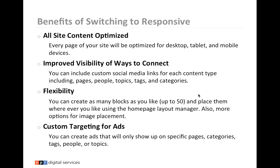Benefits of switching to responsive: all site content is optimized — every page of your site will be optimized for desktop, tablet, and mobile devices. A good way to see that is to look at your backstage site and resize it to see how it optimizes between the different breakpoints. Improved visibility of ways to connect — you can now include custom social media links for each content type, including pages, people, topics, tags, and categories. Stations kept asking for the ability to add Google Plus as a social media option. Now you have the ability to set those up yourself.